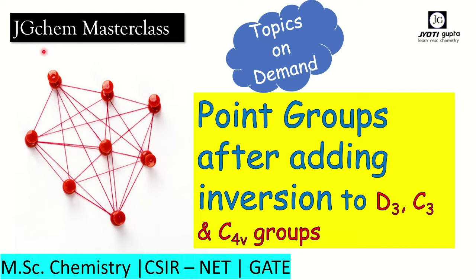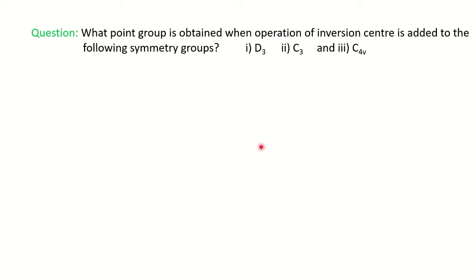Hello everyone, welcome to JVGK Masterclass. In today's video we are going to see: if you add an inversion center to the D3, C3, and C4v groups, which point group will you get? This question is from BCU University and is on demand. The question is: you are adding the inversion center to the following groups — after adding it, which point group will they convert into? We will first see the general list of symmetry elements and respective point groups.